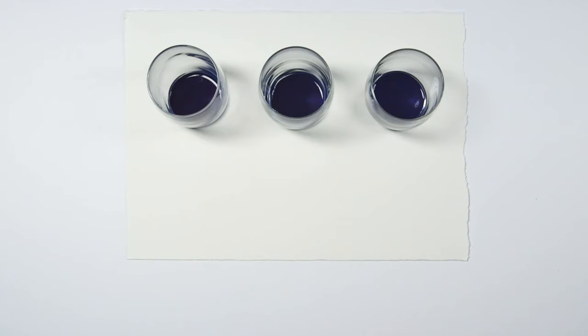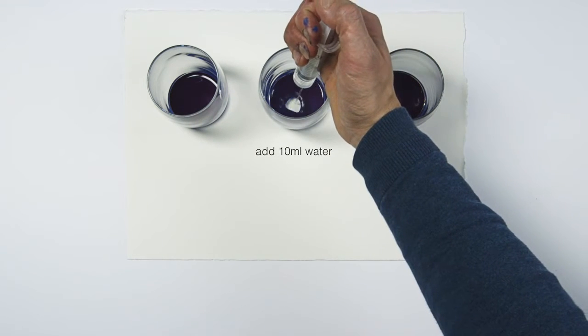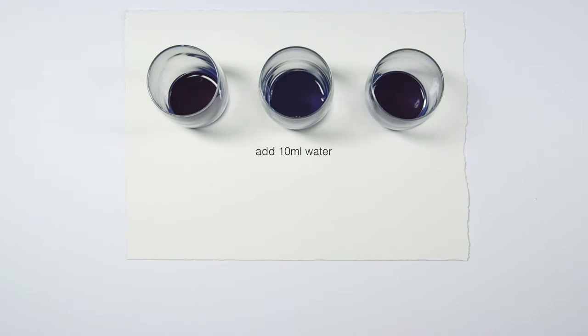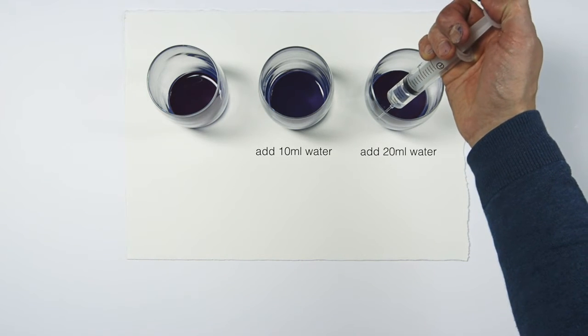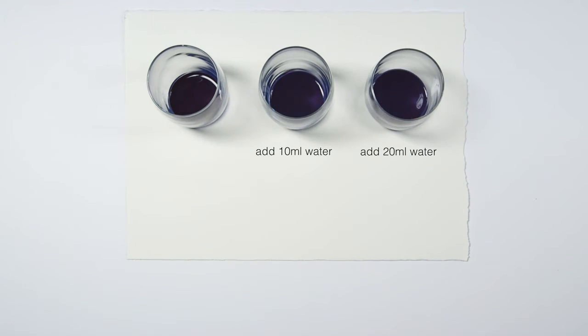Here we have three glasses each with 10 millilitres of paint. I'm going to dilute the second glass with 10 millilitres of water and the third with 20. So now we have three sets of paint all the same colour, just three different tones from dark to light.